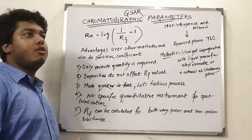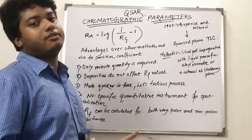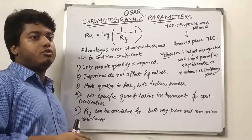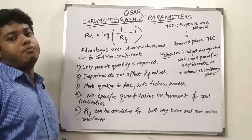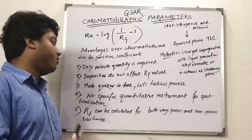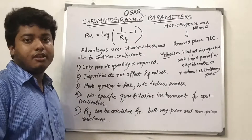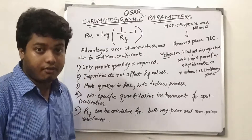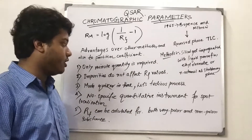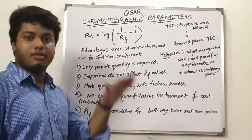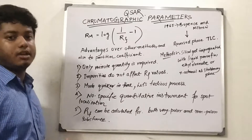Rm values are defined as the ratio of the distance traveled by the solute to the distance traveled by the solvent, and it involves the equilibrium established between the mobile phase and the stationary phase. Additionally, no specific sophisticated instrument is required for quantitative determination. TLC is basically a spot analysis, so identifying spot localization does not require any sophisticated machine — spots are localized according to various polarities.